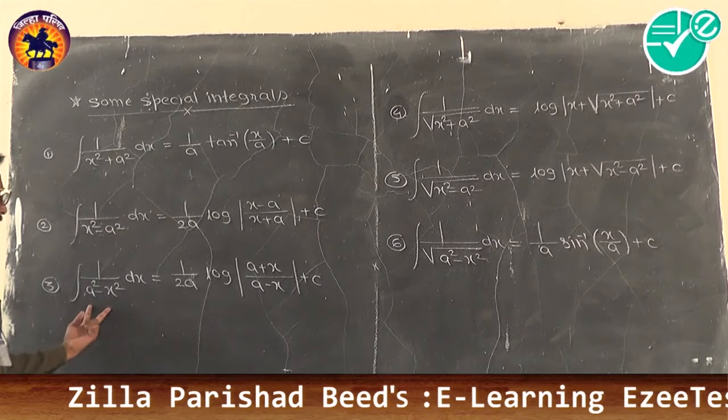We have solved 10 problems on this special integral. The remaining problems we will solve in the next lecture. Now take the 11th problem: integration of 1/(7 + 6x − x²) dx. Here the coefficient of x² is −1, which is allowed, so we need not take common.